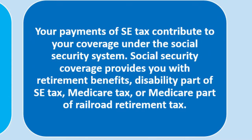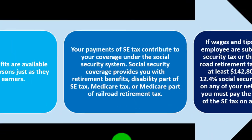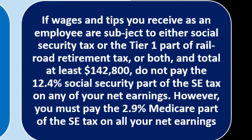Social Security coverage provides retirement benefits, disability — part of the SE tax — Medicare tax, and Medicare part of railroad retirement tax. If wages and tips you receive as an employee are subject to Social Security tax or the Tier 1 part of railroad retirement tax, and the total is at least $142,800, you do not pay the 12.4% Social Security part of the SE tax on any of your earnings.